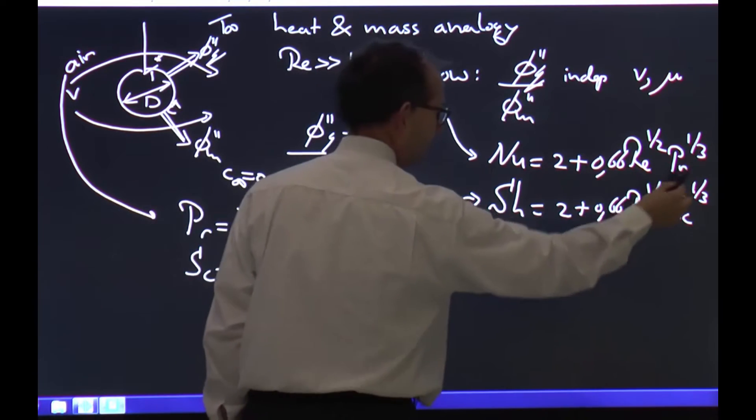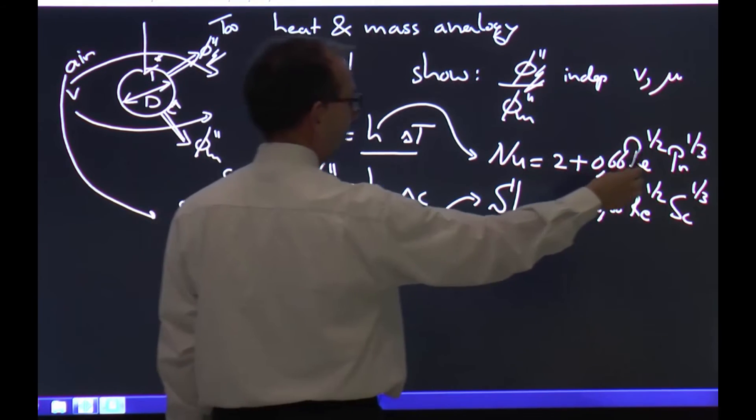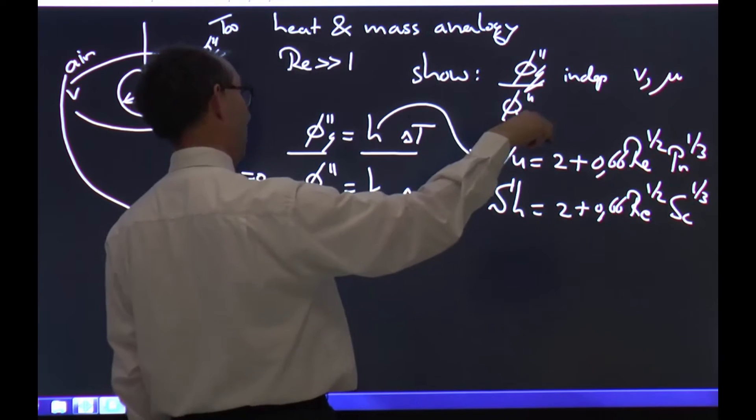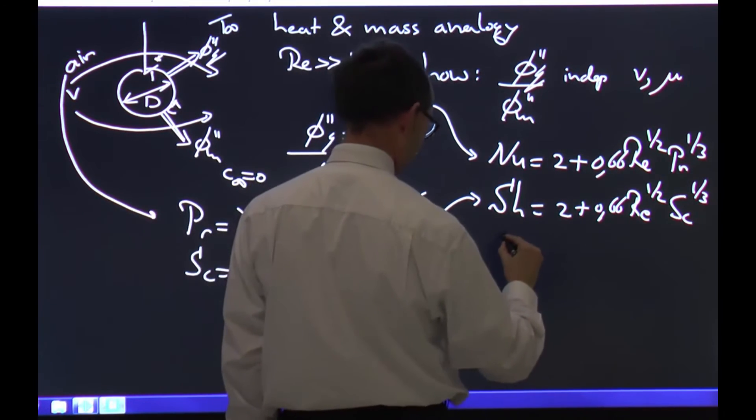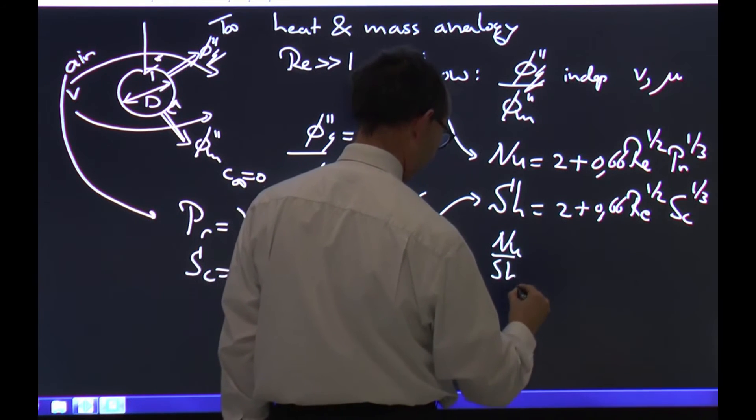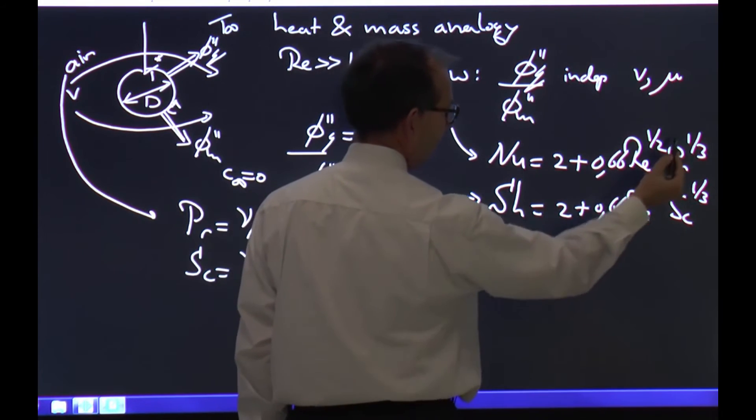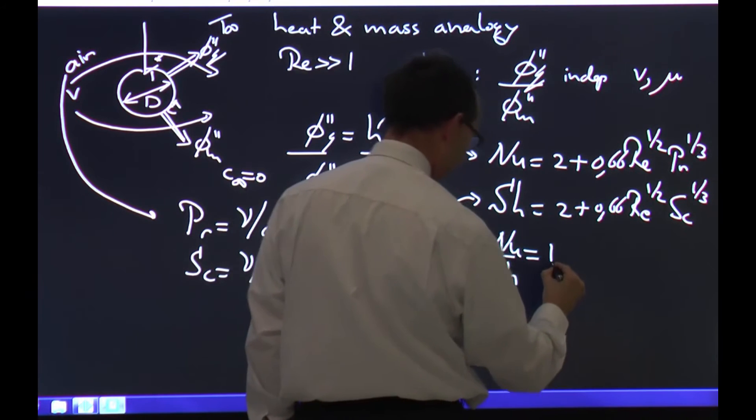So these two are order one. Reynolds is much bigger than one, so the square root of Reynolds multiplied by 0.66 is also much bigger than one. And thus Nusselt over Sherwood is about one. The 2 drops out, these two drop out, Reynolds over Reynolds gives one.